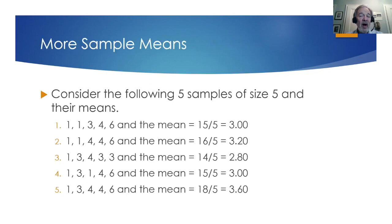Consider the following five samples of size 5 and their means. 1, 1, 3, 4, 6 with a mean of 3.1. 1, 1, 4, 4, 6 with a mean of 3.2. 1, 3, 4, 3, 3 with a mean of 2.8.